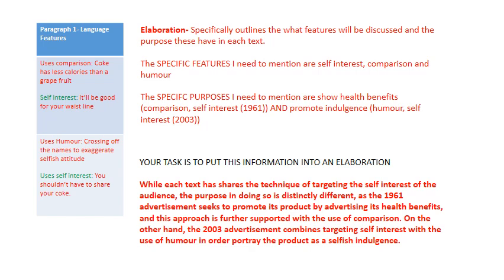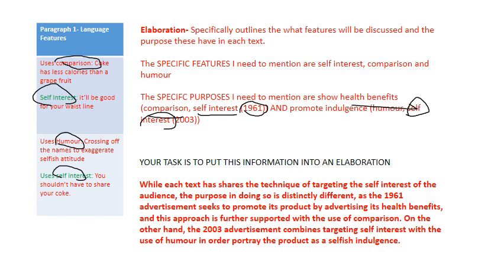Notice how I've got quite a bit of detail here, but I need it for a good elaboration at this level. 'While each text shares the technique of targeting the self-interest of the audience, the purpose in doing so is distinctly different, as the 1961 advertisement seeks to promote its product by advertising its health benefits, and this approach is further supported with the use of comparison. On the other hand, the 2003 advertisement combines targeting self-interest with the use of humour in order to portray the product as a selfish indulgence.' I've covered self-interest, humour, comparison, and I've been specific about each one. Notice how I'm bringing the details in slowly.